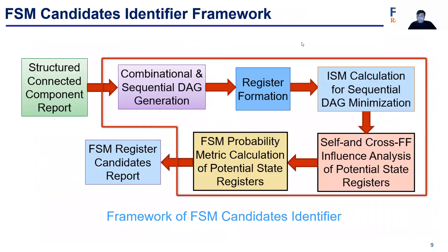Here is shown the high-level overview of the EFSM candidates identifier framework, which takes the structured connected components report as input. In the first stage, the combinational and sequential DAG is generated. Next, all the registers present in the netlist are identified. Finally, we perform ISM calculation to minimize the sequential DAG, and we also perform self and cross-flip-flop analysis to calculate the FSM probability metric to generate the FSM register candidates report.